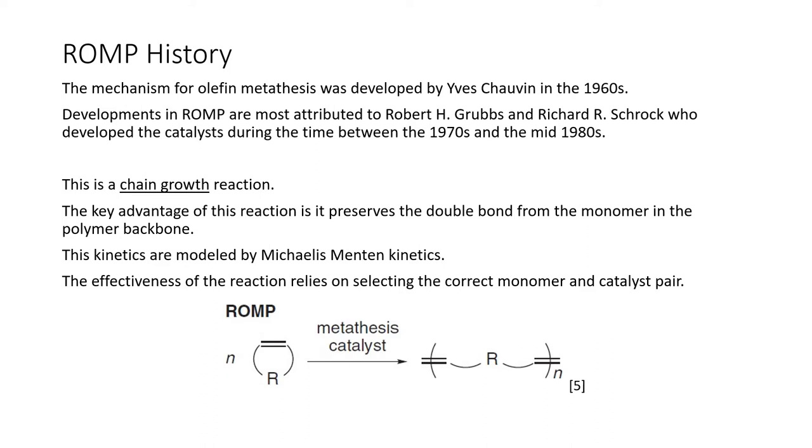The three of these investigators together were awarded the Nobel Prize in 2005 for their work contributing to olefin metathesis as well as ROMP. So you can see a schematic of the general reaction for ROMP below where we have cyclic olefins. That's the focus of ROMP, which upon metathesis, upon being catalyzed by a metathesis catalyst, form a linear structure with double bonds in the backbone. So this is a chain growth reaction. And the key advantage is that we do keep these double bonds in the backbone. And since we're using a catalyst, we can use Michaelis-Menten kinetics to talk about the kinetics of this reaction. We also know that this relationship between the monomer and the catalyst is very important for determining the effectiveness of this ROMP technique.